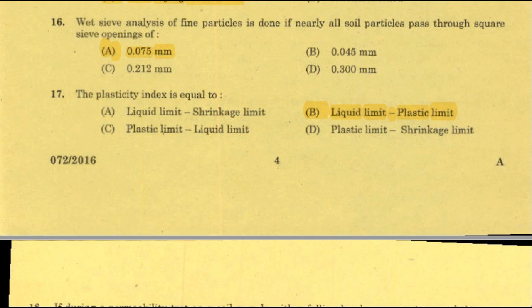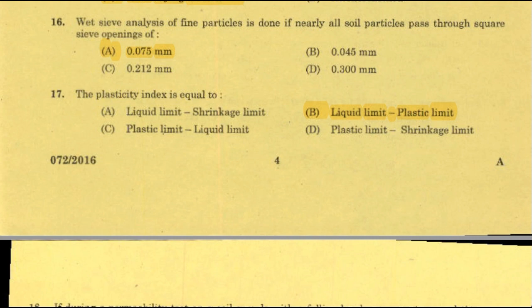Three conditions for plasticity index equal to 0 (non-plastic soil): first, when liquid limit equals plastic limit, making IP equal to 0; second, when plastic limit is greater than liquid limit; third, when both liquid limit and plastic limit cannot be determined. In all three cases the soil is in a non-plastic condition.